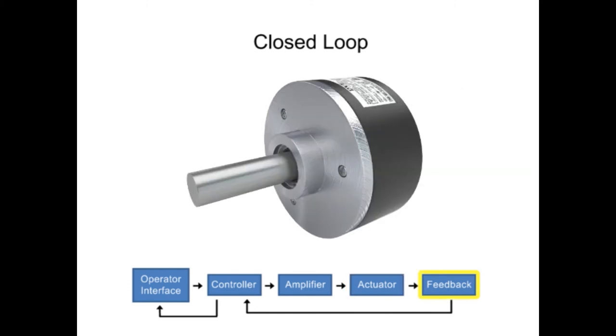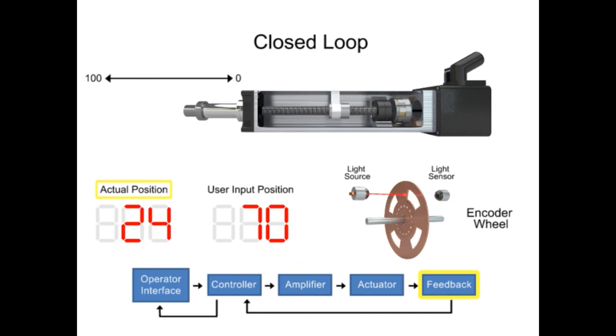The feedback device, usually an encoder or position sensing device, recognizes the motor position and reports the result back to the controller. As the encoder rotates, position and speed information are relayed to the controller and compared to the user input.